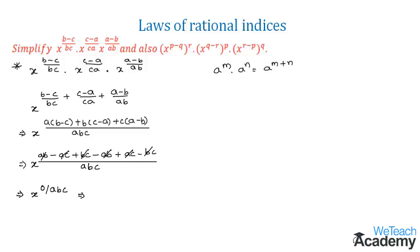So this would get as x power 0 divided by abc. That implies we get the value of this term as x power 0, which is nothing but 1. Now let us solve the other example.